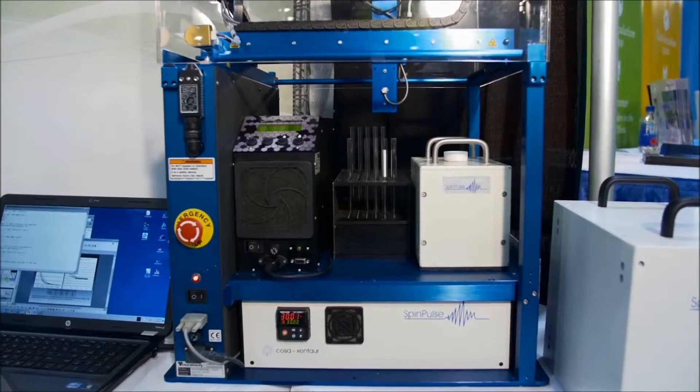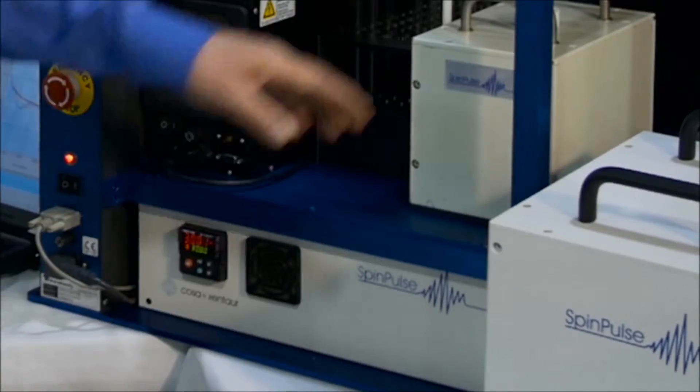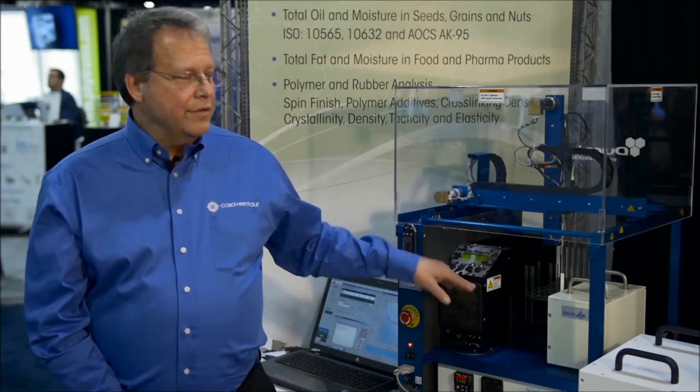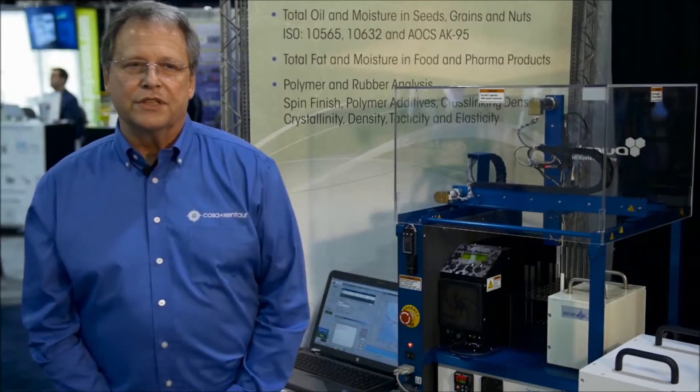The system consists of three or four items depending on whether you have an auto sampler or not. This is your spectrometer. You have a magnet, heater, the arm, and then of course a computer to control the system.